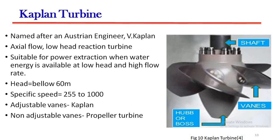Kaplan turbine is named after an Austrian engineer V. Kaplan. It is an axial flow low head reaction turbine, suitable for power extraction when water energy is available at low head and high flow rate. The head is below 60 meters and specific speed is 255 to 1000. The adjustable vanes type is called Kaplan turbine, while the non-adjustable vanes type is called a propeller turbine.